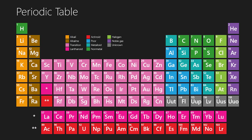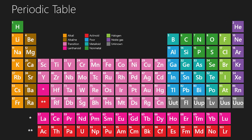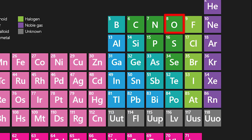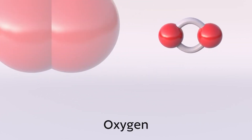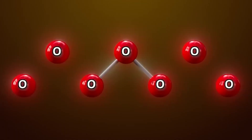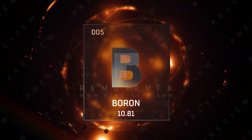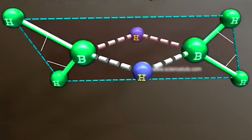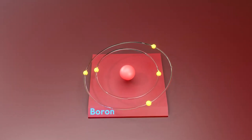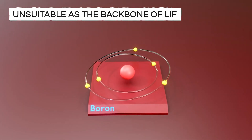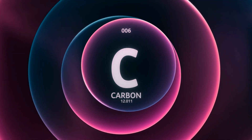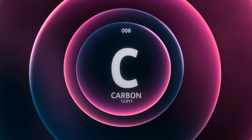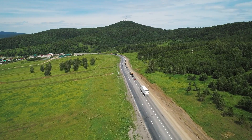In contrast, other elements fall short in terms of versatility. Oxygen, despite being the most abundant element on Earth, can only form two bonds. Once it bonds with two other atoms, its capabilities are limited — it cannot create the intricate scaffolds of complex molecules that carbon can. While elements like boron can form three bonds and potentially complex structures, their scarcity renders them unsuitable as the backbone of life. Availability is a vital consideration, and carbon, with its abundance and intricate capabilities, emerges as the natural choice for the foundation of all life on Earth.